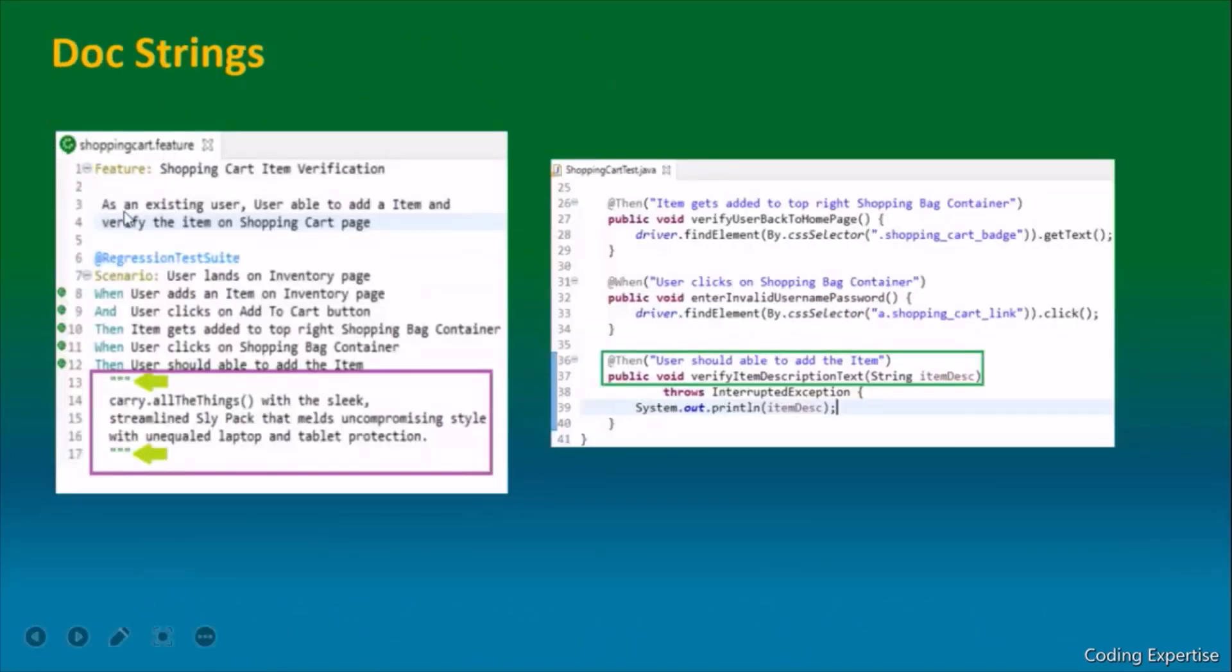ShoppingCart.feature is a feature file. We have the feature ShoppingCartItemVerification. As an existing user, user is able to add an item and verify the item on shopping cart page. Add regression test suite is a tag. We talked about everything in the last video. This is the thing we are currently talking about. We have a portion of text in multiple lines carried out with sleek streamlined style that melts uncompromising style with unequaled laptop and tablet protection. We cannot place this text in a single line, that's why we prefer to use this text in multiple lines inside triple quotes.